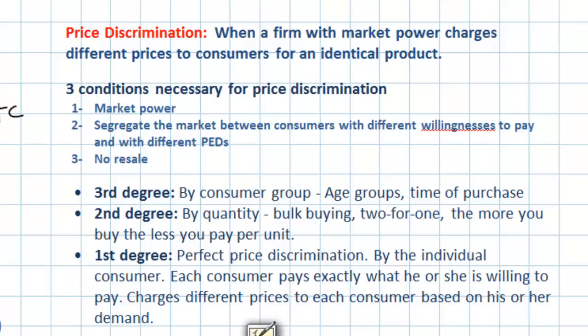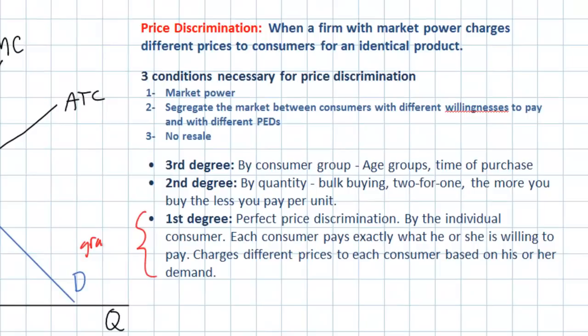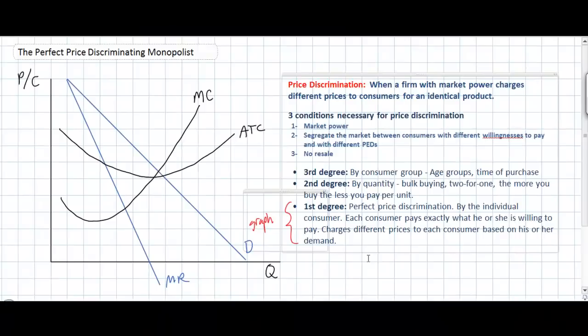Since these video lessons are targeted at AP and IB economics students, we're going to focus on graphing first-degree price discrimination. While there are graphs for second and third degree as well, we won't examine those today. Perfect price discrimination can easily be graphed using a demand, marginal revenue, and cost diagram such as the one on the left here.